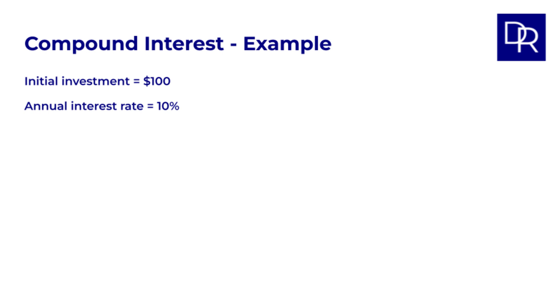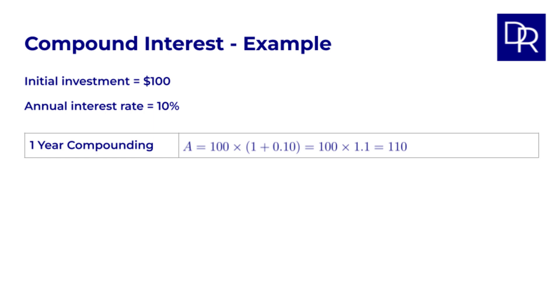Let's start by reminding ourselves how compound interest works. To make this easier, let's use a specific example. An initial investment of $100 and an annual interest rate of 10%. If we invest $100 for one year at 10% interest paid annually, the accumulated amount A is 100 times 1 plus 10%, so 100 times 1.1, which equals $110.